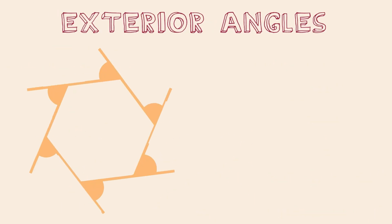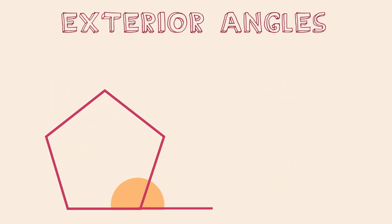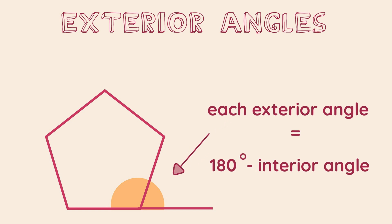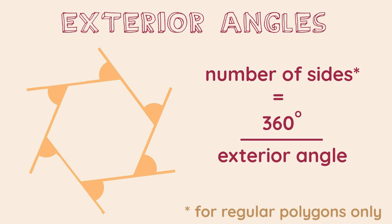Now let's look at exterior angles. The important point to remember is that the exterior angles of any polygon will always add up to 360 degrees. Additionally, if we know the interior angle, we can calculate the exterior angle by using the angles-on-a-straight-line fact: angles on a straight line always add up to 180 degrees. Therefore, we take the interior angle away from 180 to find the exterior angle. Finally, for regular polygons only, we can find the number of sides by dividing 360 by the value of the exterior angle — this tells us how many angles and sides there are.